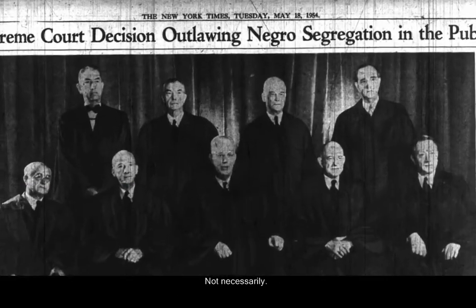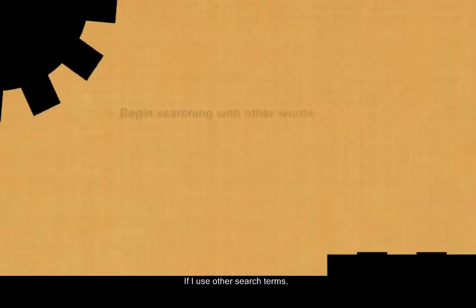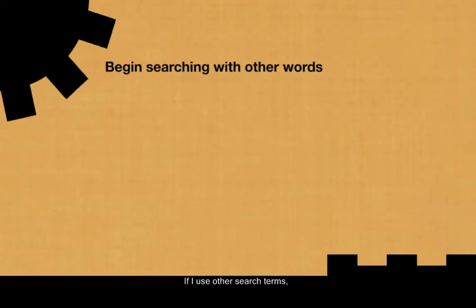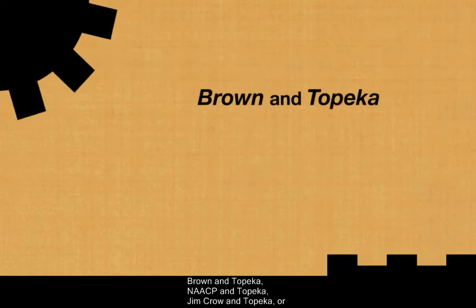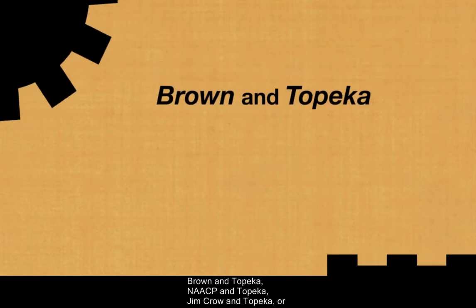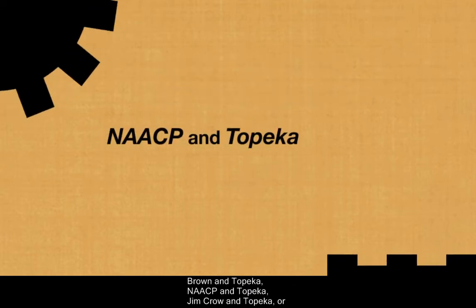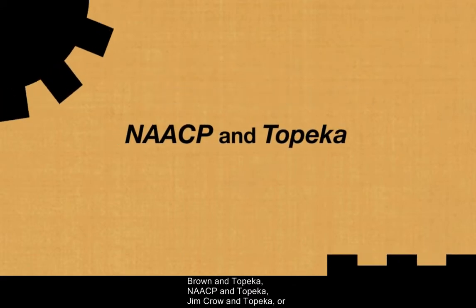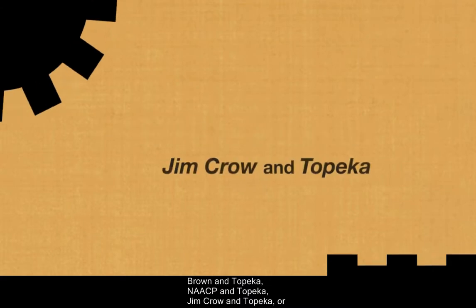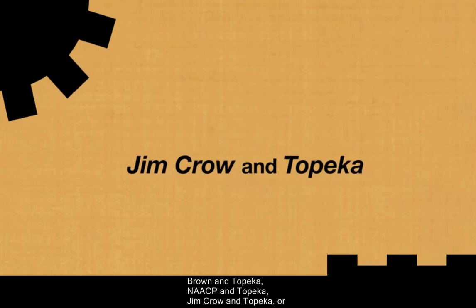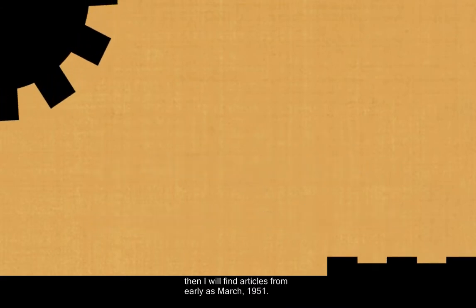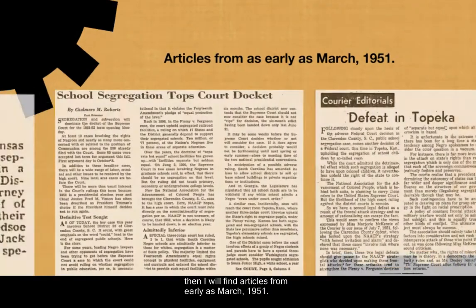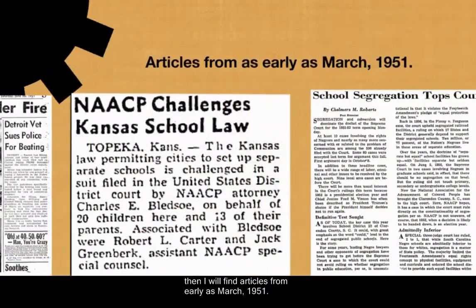Does this mean there was no newspaper coverage of the case during the three years leading up to the Supreme Court decision? Not necessarily. If I use other search terms like Brown v. Topeka, NAACP v. Topeka, Jim Crow v. Topeka, or segregation v. Topeka, then I will find articles from as early as March 1951.